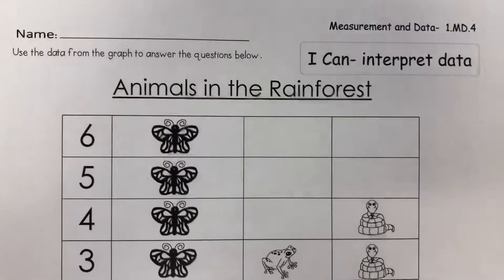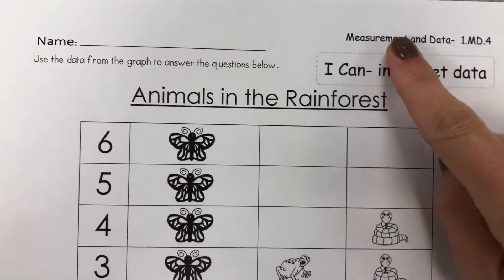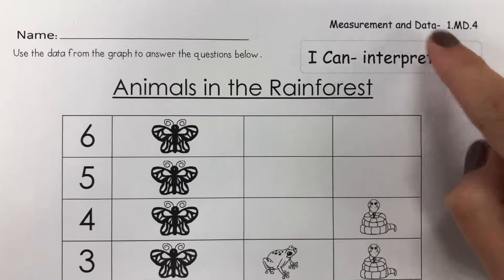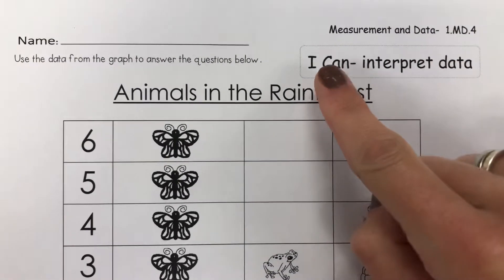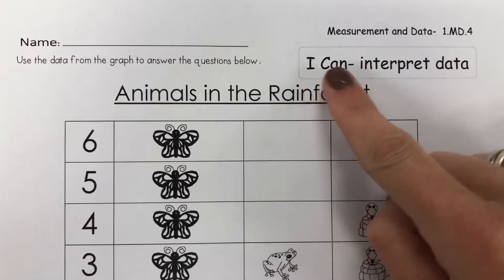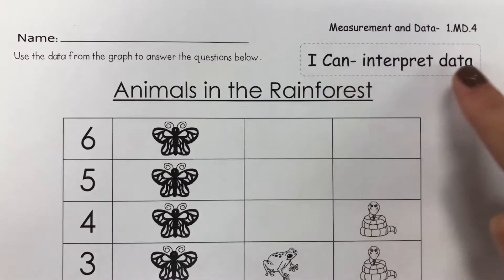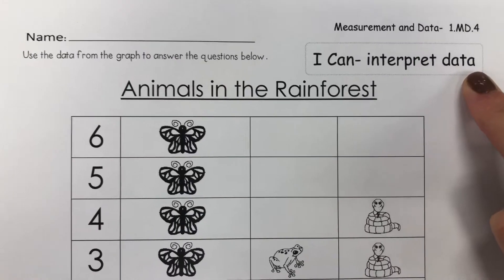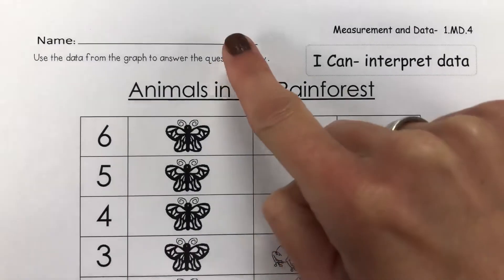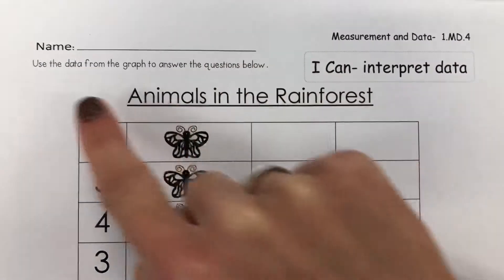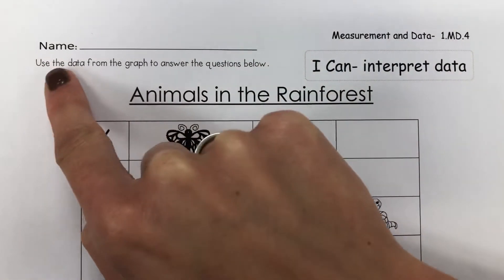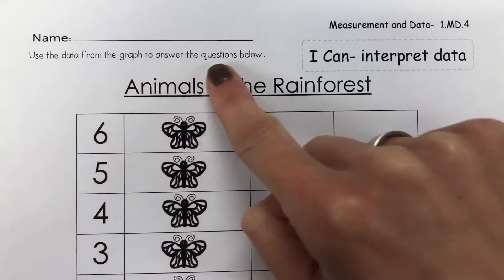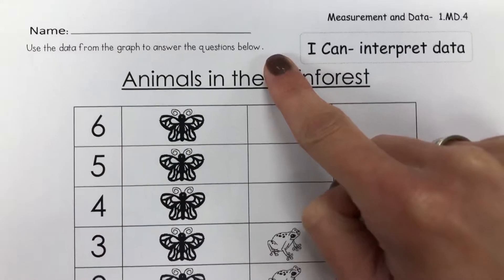This is your math paper for today. Today, we are working with measurement and data. Our 'I can' statement is: I can interpret data, or understand data. Please put your name at the top. Today, we will use the data from the graph to answer the questions below.